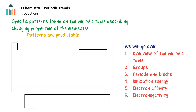More specifically, we'll first start with a general overview of the periodic table. Next, we'll talk about groups, followed by a discussion of periods and blocks. After that, we'll discuss the concepts of ionization energy, electron affinity, and electronegativity, and how these change across a period or down a group. So let's jump straight into it.